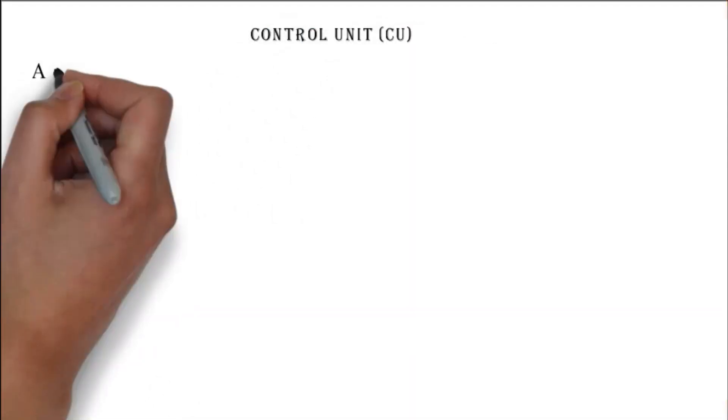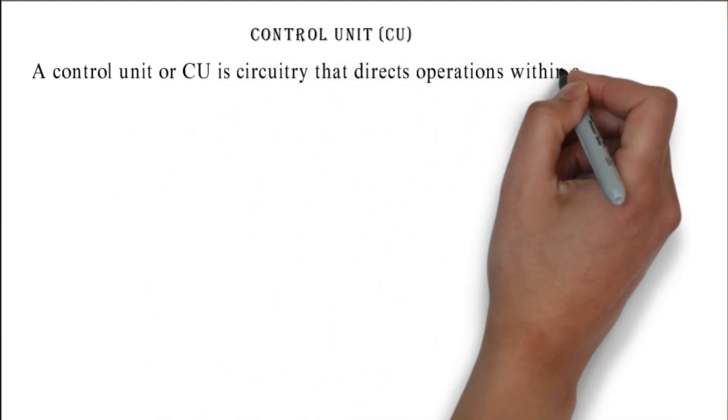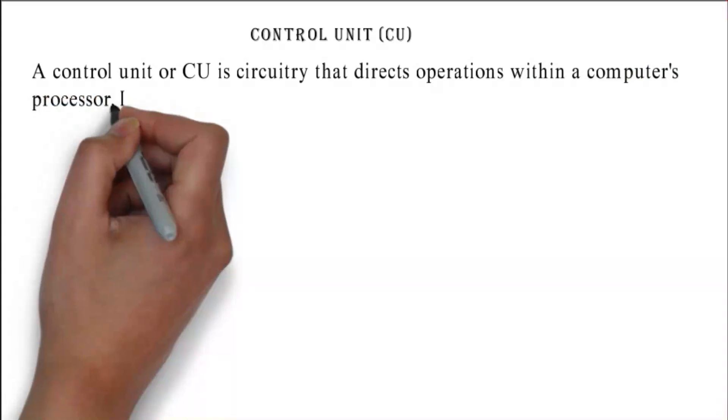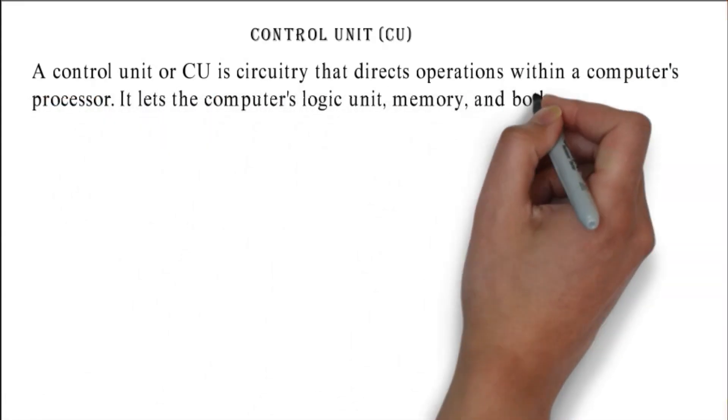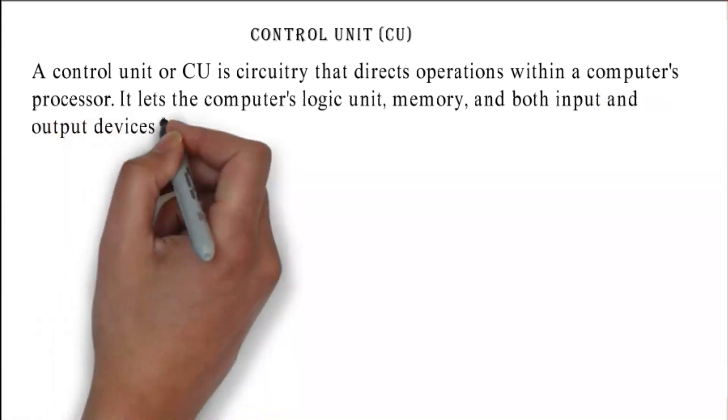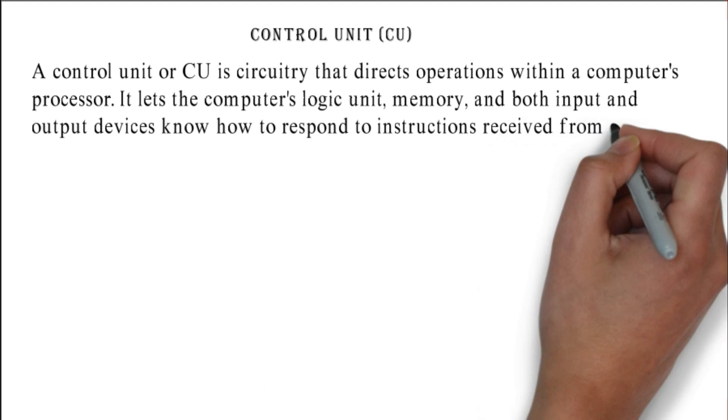Control unit (CU): a control unit or CU is circuitry that directs operations within a computer's processor. It lets the computer's logic unit, memory, and both input and output devices know how to respond to instructions received from a program.